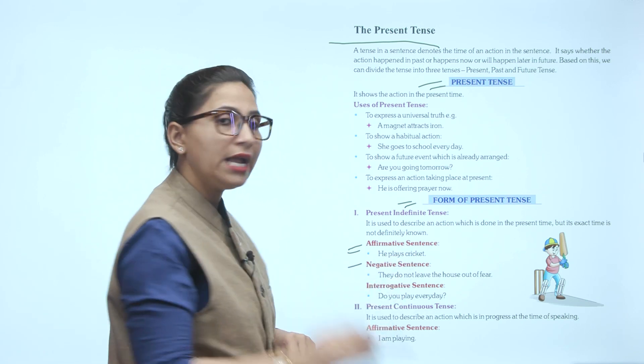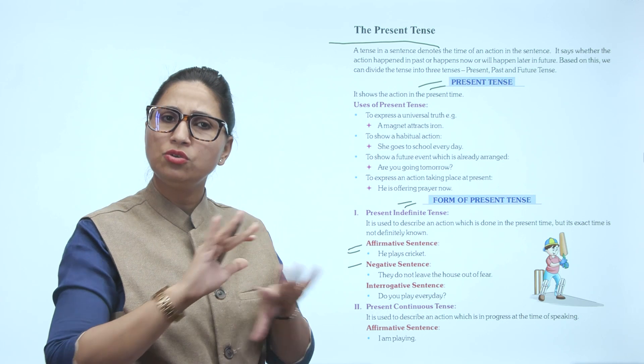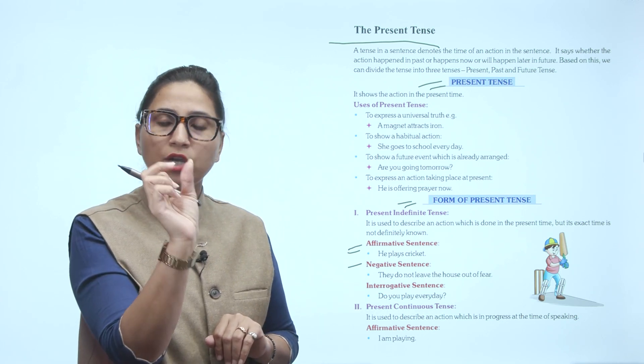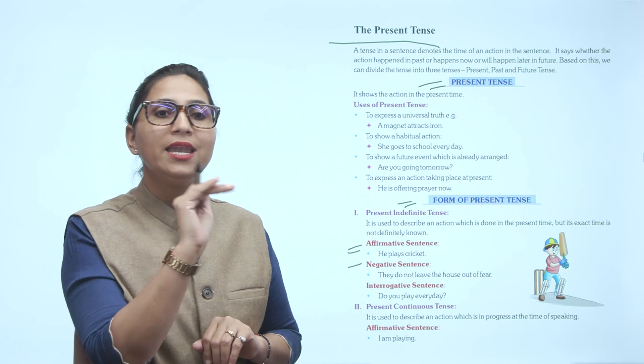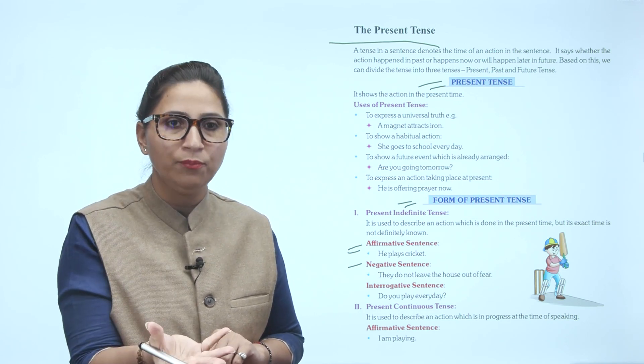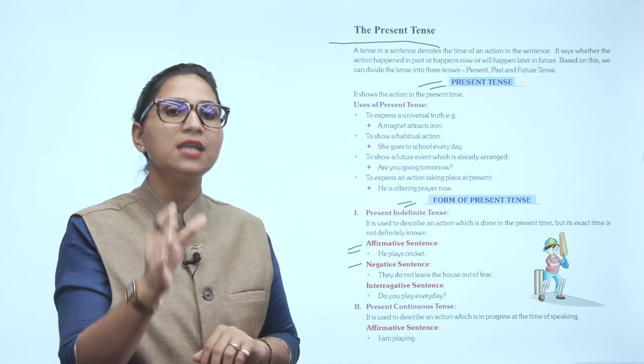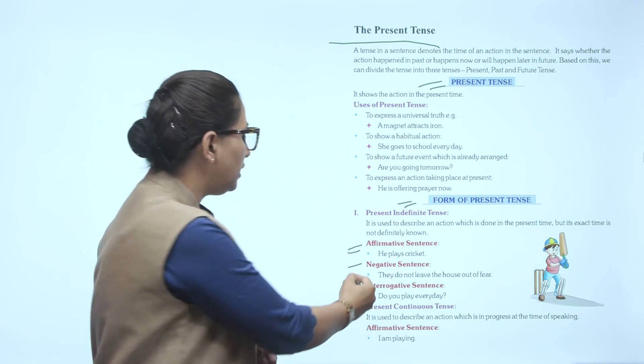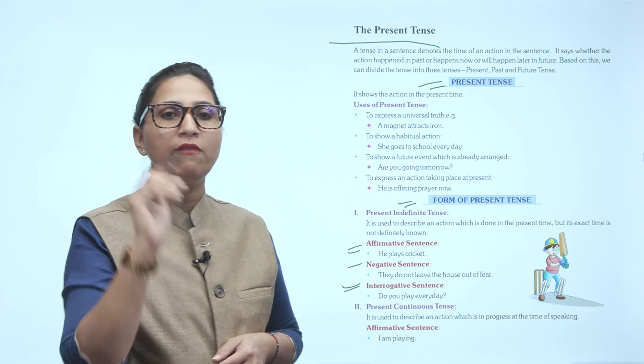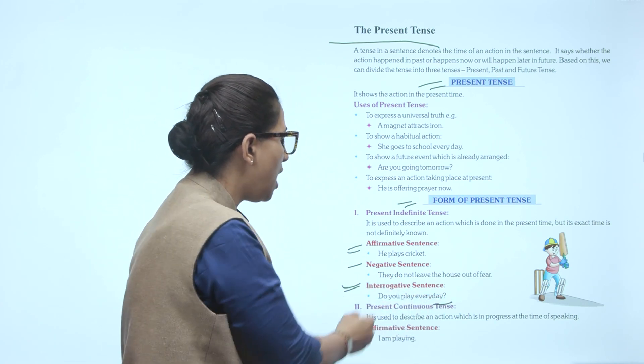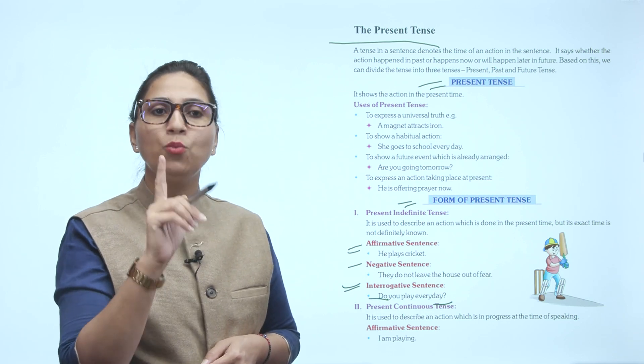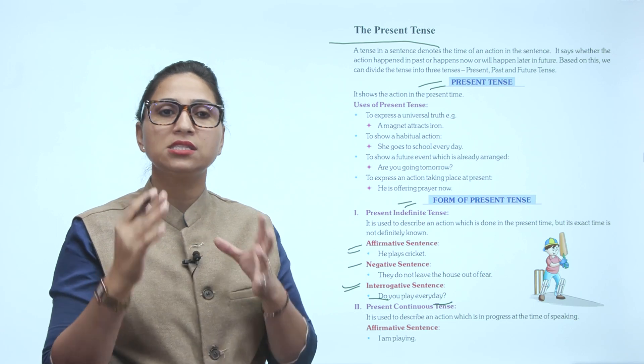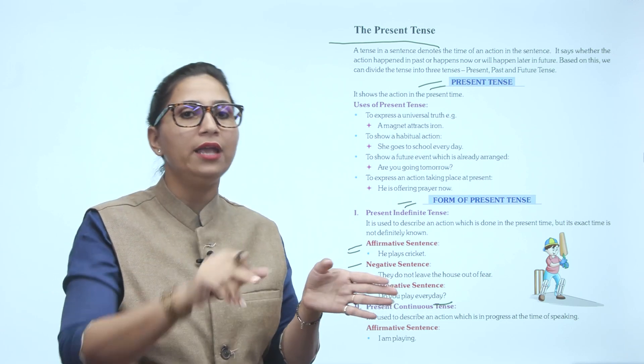Next is negative sentence. They do not leave the house out of fear. 'Do not' is used to make the sentence negative. Next is interrogative sentence. Interrogative sentences always use a question mark and start with a helping verb. Example: Do you play every day?